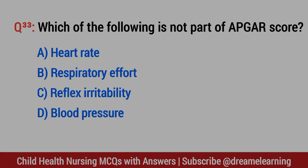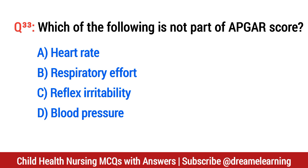Question number 33. Which of the following is not part of the Apgar score? The right option is D: blood pressure.